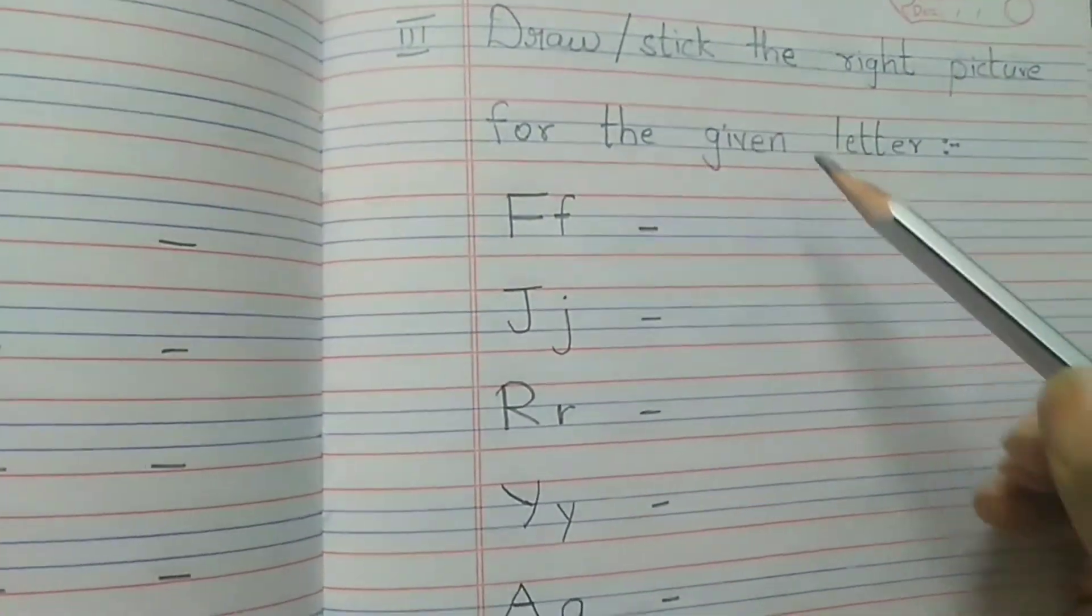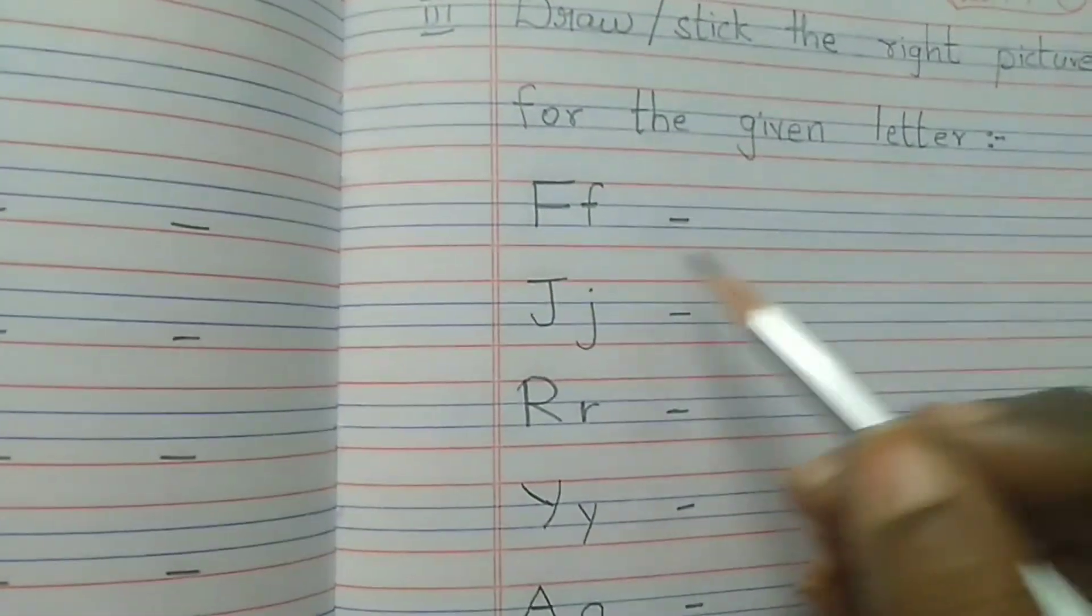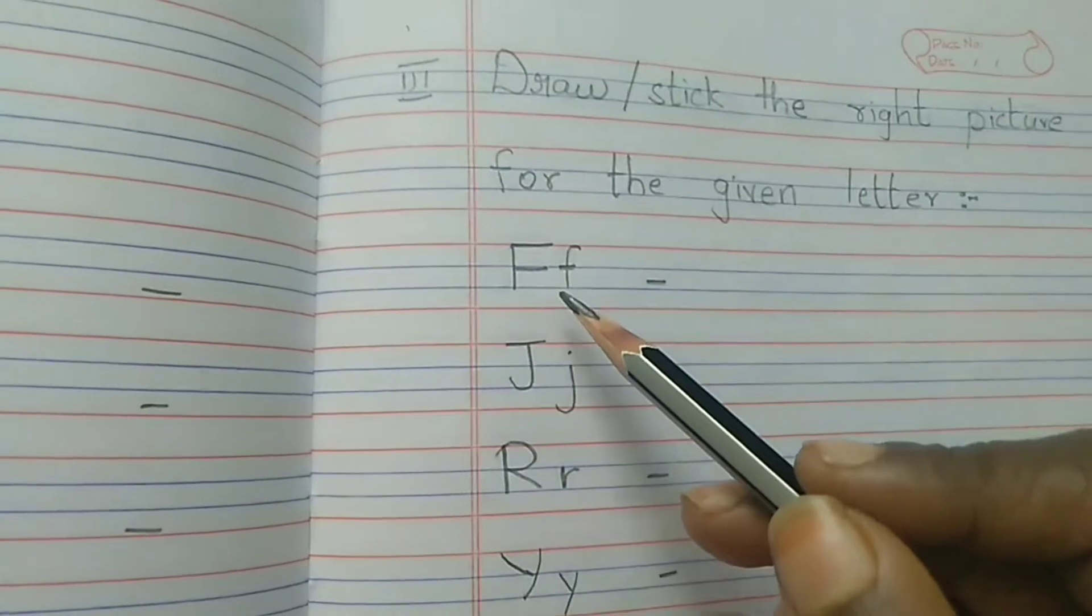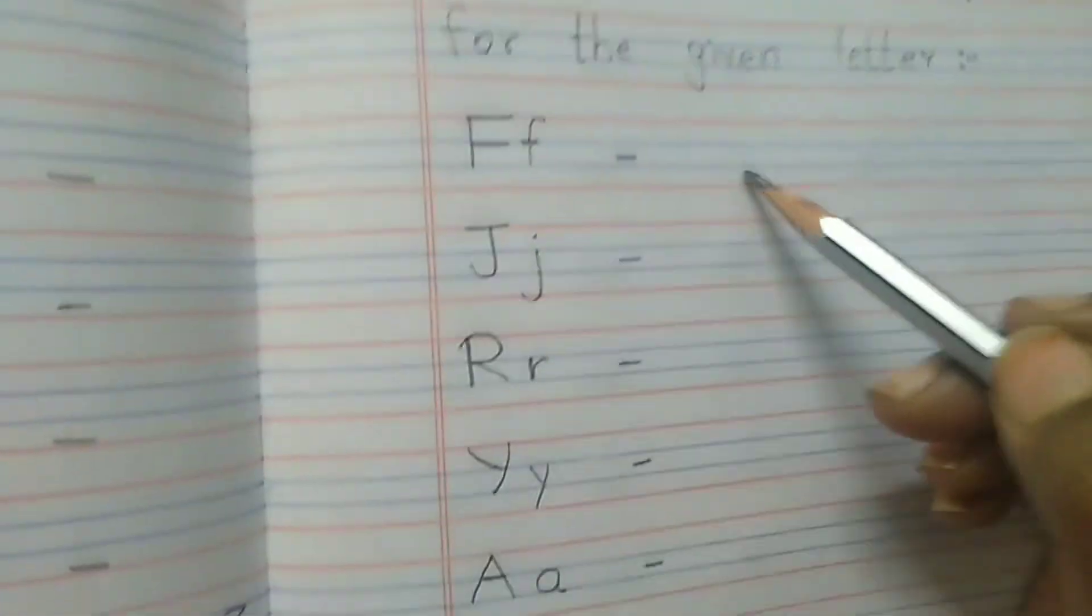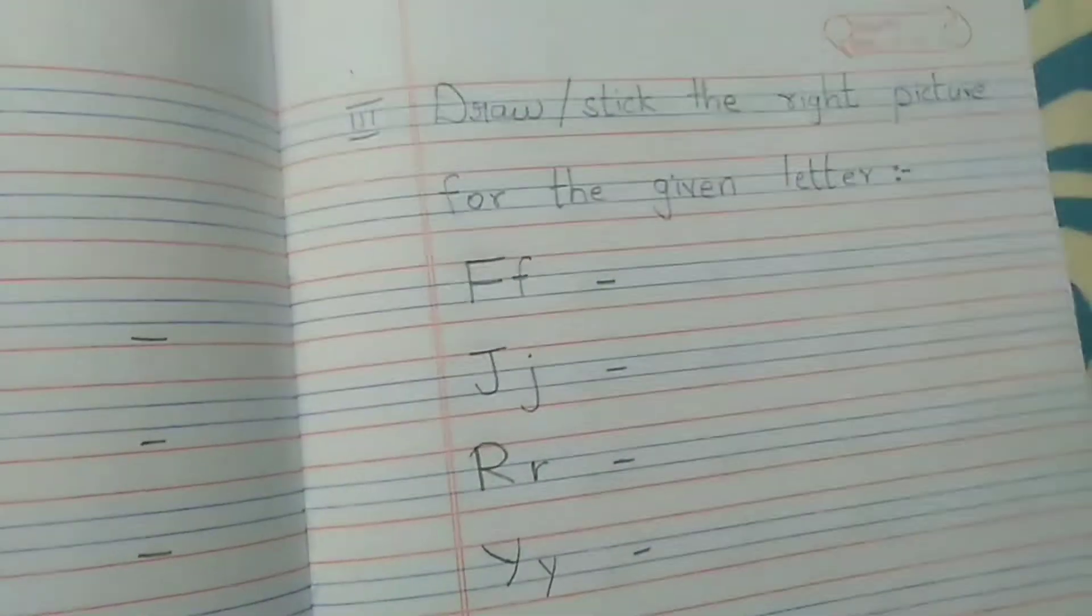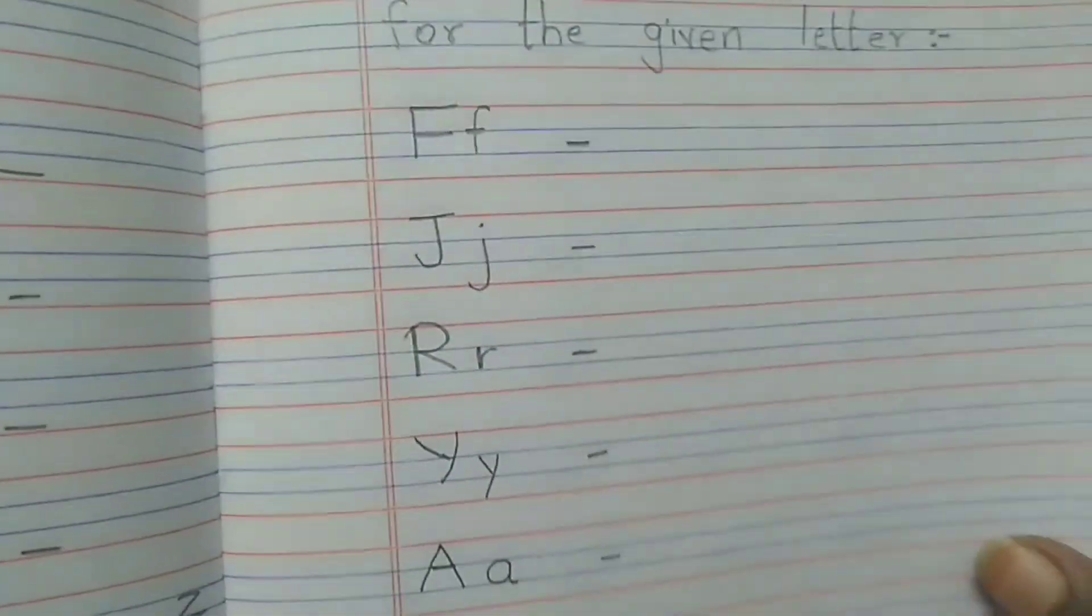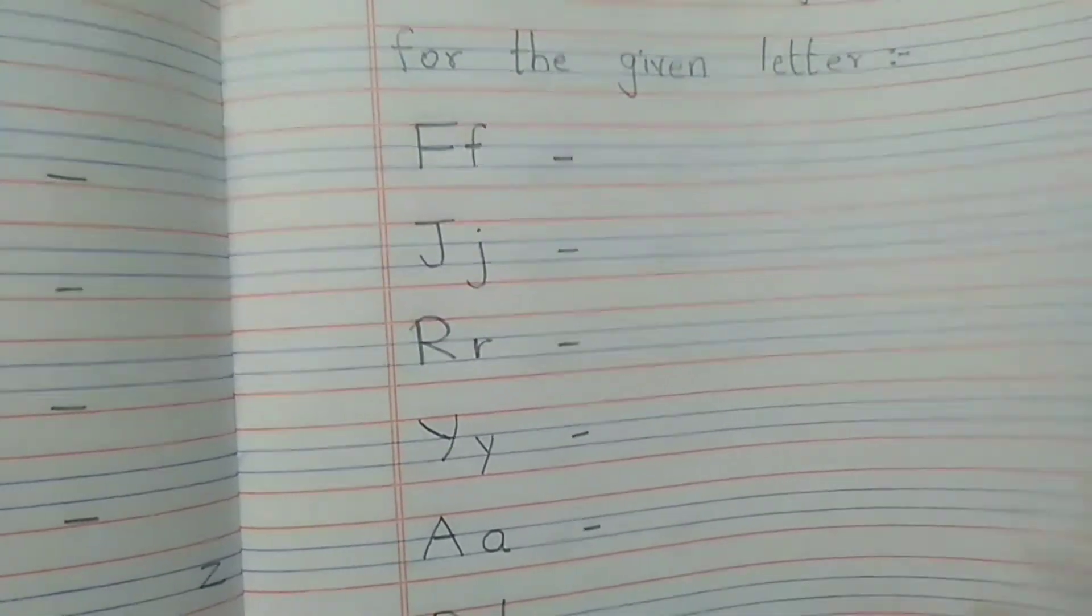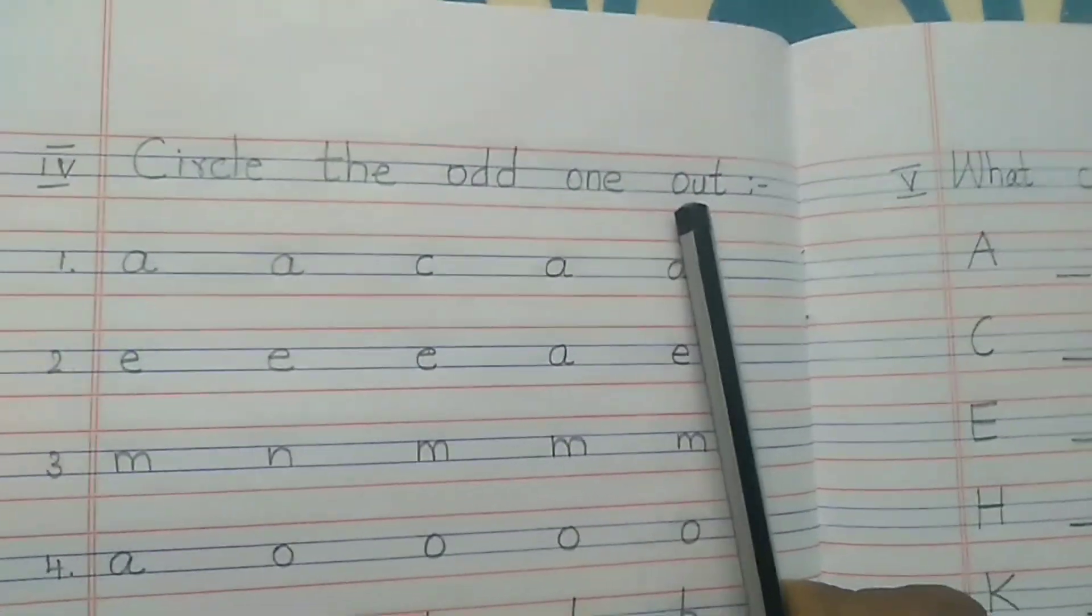Circle the right picture for the given letter. You can draw or if you have small pictures you can stick. F, F for - whatever comes here, any picture related to the letter. Third main is you have to stick or draw the related object to the given letter. Next main, circle the odd one out.